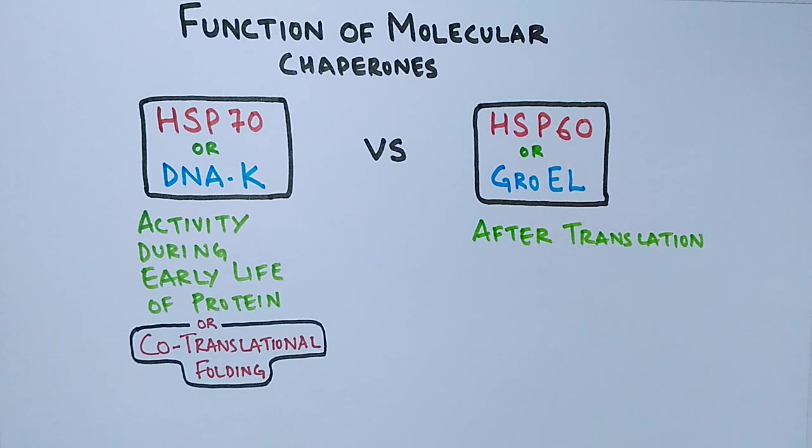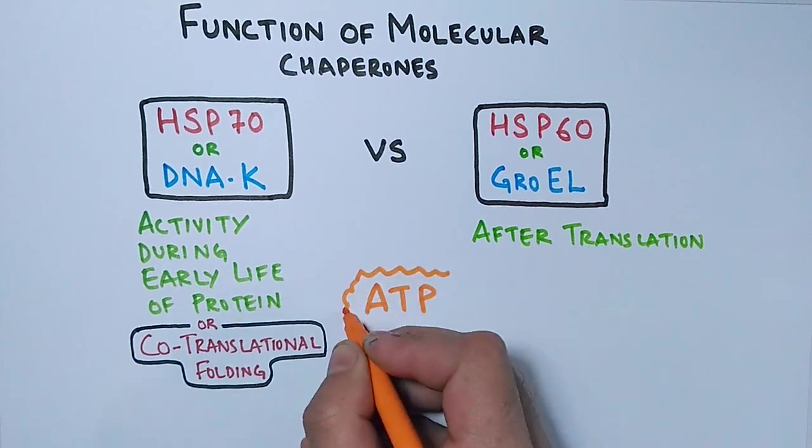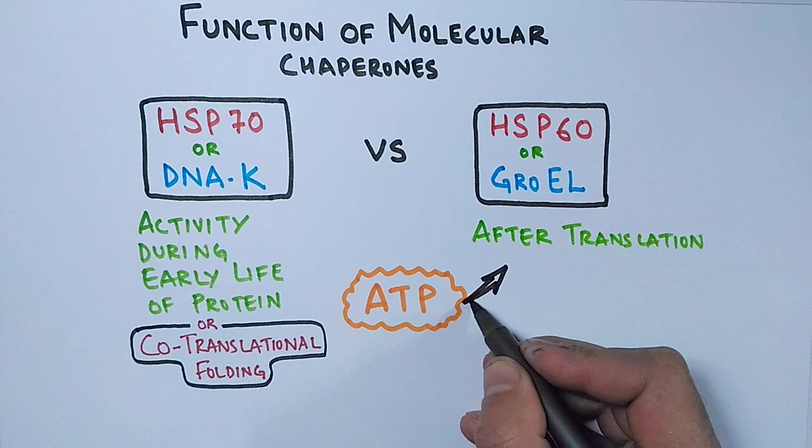This GroEL does not work alone to reshape the misfolded protein back to its normal conformation, but it works with the help of another chaperone called GroES that forms the cap of GroEL. This GroES forms the HSP10 in case of eukaryotes. Both of these chaperone proteins need ATP molecules to drive the protein folding or to keep the protein on folding pathway.